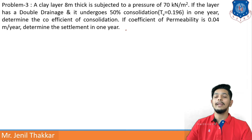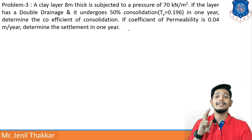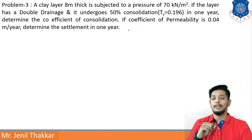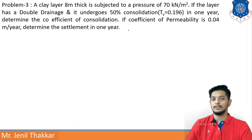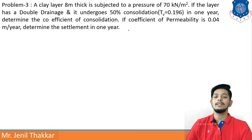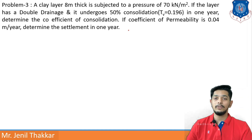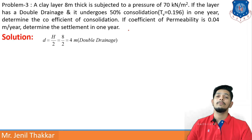Problem 3: A clay layer 8 meter thick is subjected to a pressure of 70 kN/m². The layer has double drainage, so depth is taken as H/2 = 4 m. It enables 50% consolidation in one year, with Tv for 50% being 0.196. We need to determine the coefficient of consolidation Cv.